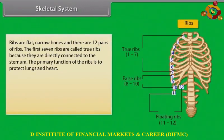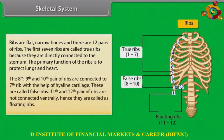The vertebral column is divided into five regions: seven cervical, twelve thoracic, five lumbar, fused sacral, and fused coccygeal. The first vertebra is the atlas. Ribs are flat, narrow bones, and there are twelve pairs of ribs. The first seven ribs are called true ribs because they are directly connected to the sternum. The primary function of the ribs is to protect the lungs and heart.